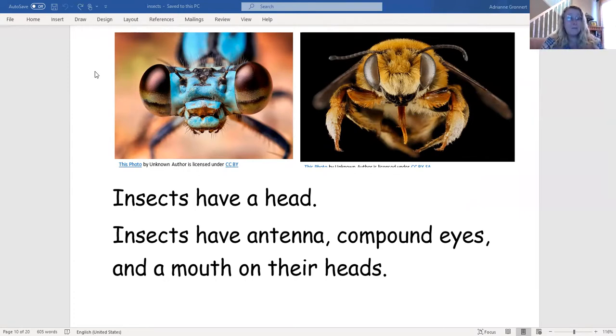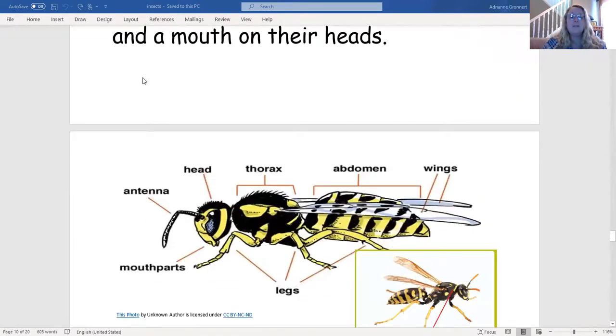Keep reading and see if we can find more because now we have insects have three body parts. Insects have antenna, compound eyes, and a mouth on their heads. Love it. Let's see what else we can find.